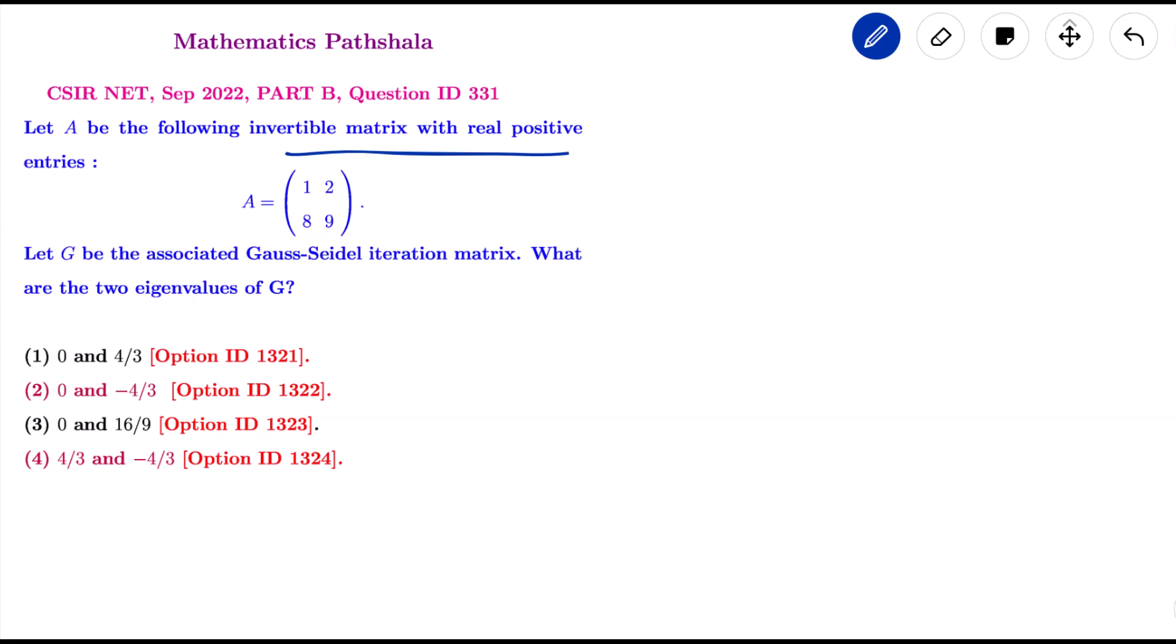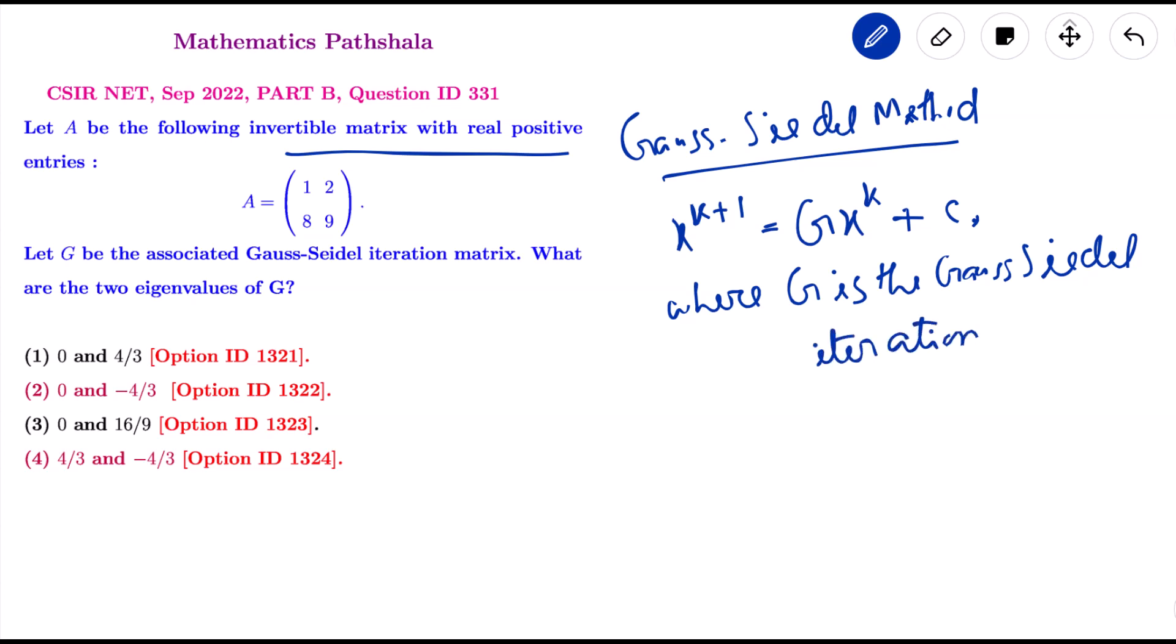First, we need to know for Gauss-Seidel method, x k plus 1 equals G x k plus c, where G is the Gauss-Seidel iteration matrix.